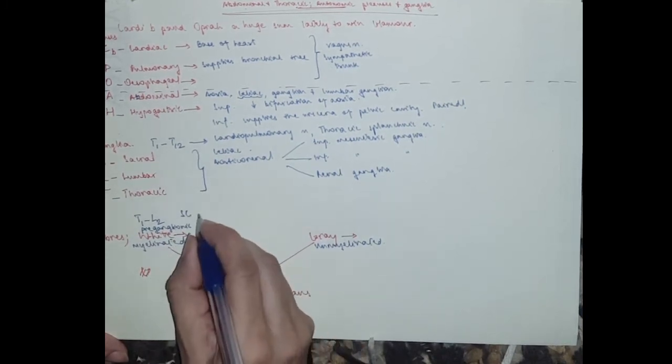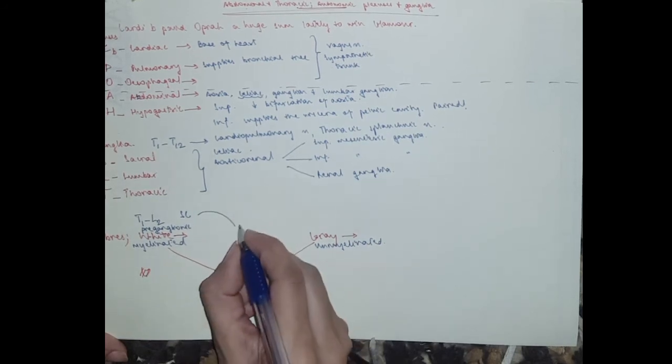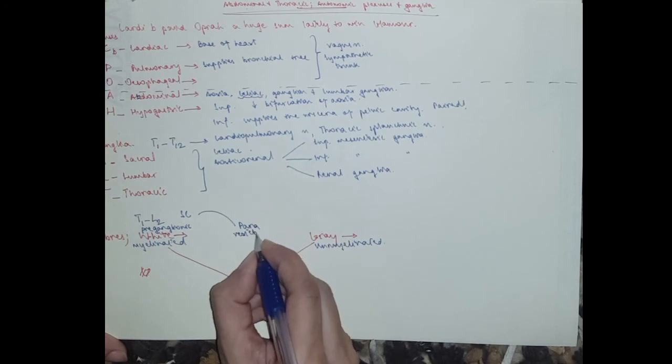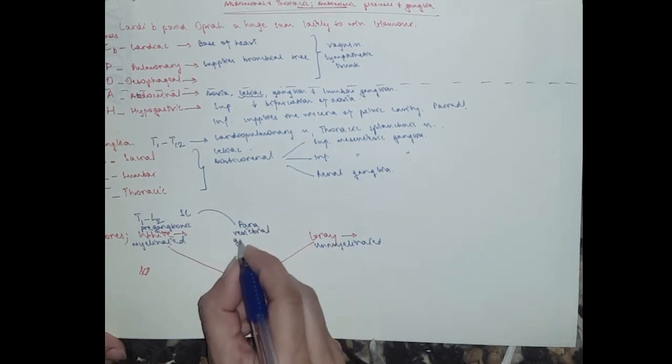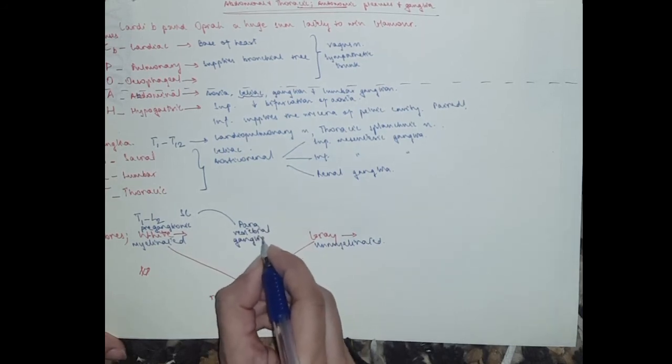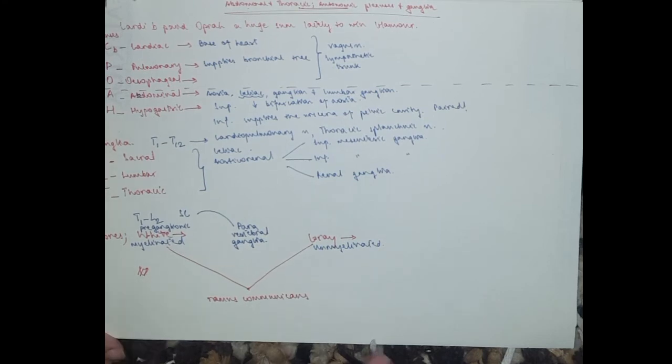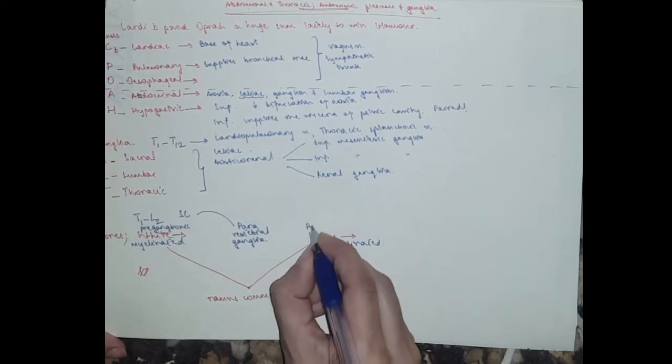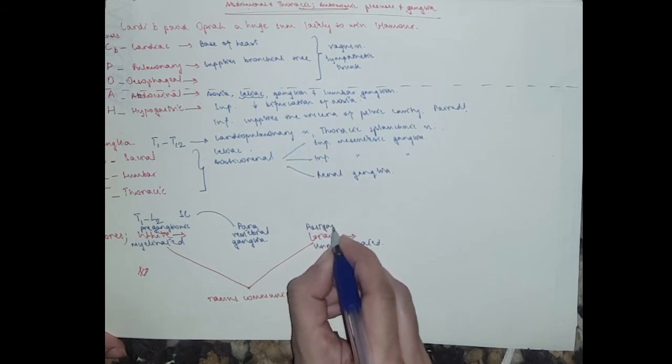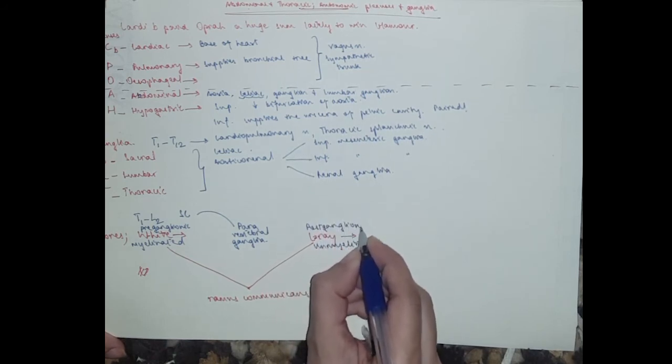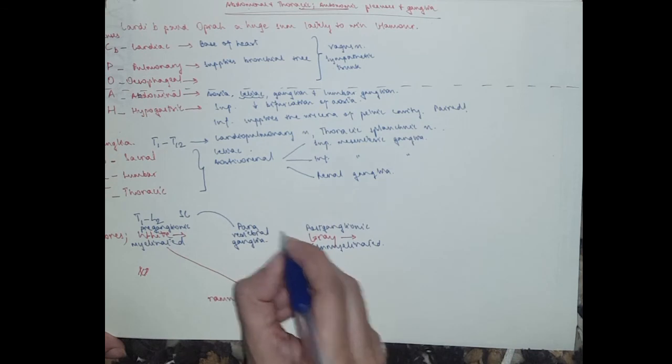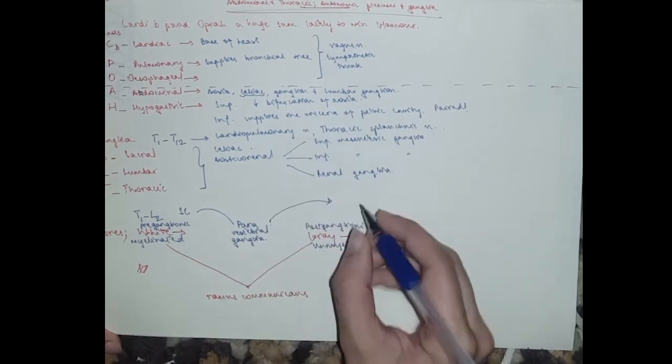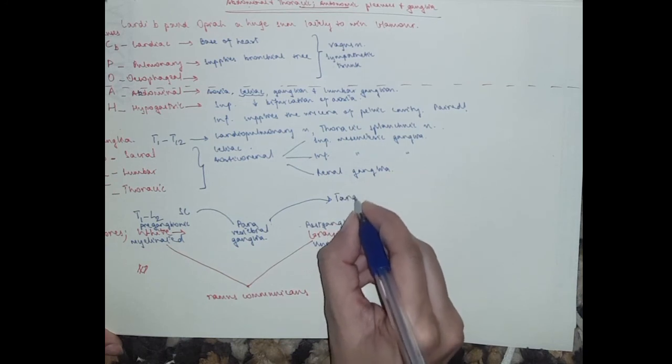And the grey ones are the postganglionic. So they go from the paravertebral ganglia to the target organs or their destination.